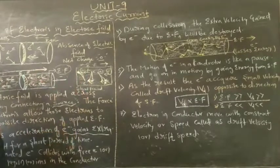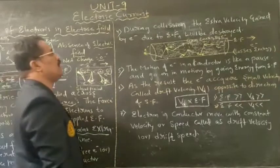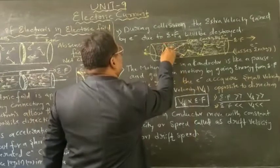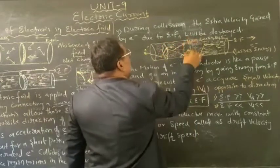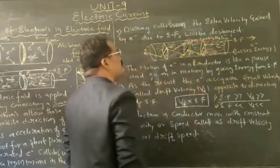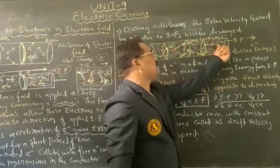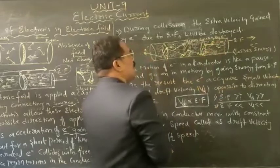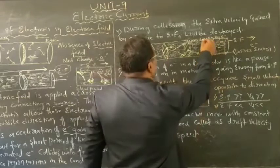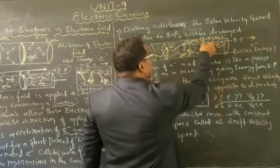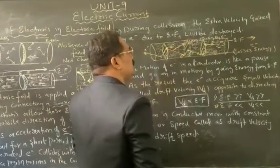For that short period of time, the accelerated electron collides with the lattice region. For example, these are the lattice regions. When the electron is gaining energy and moving in one specific direction by means of force, it reaches a lattice region — which is a positive charge — and collides with it at high speed.